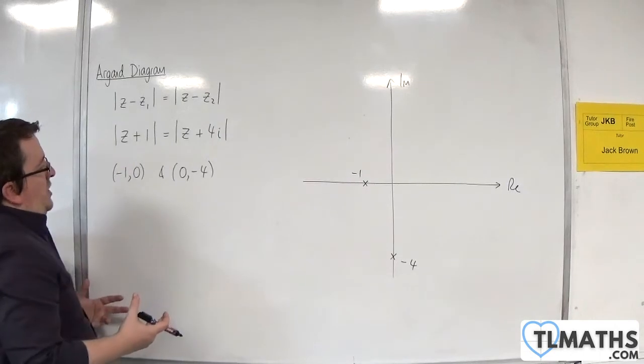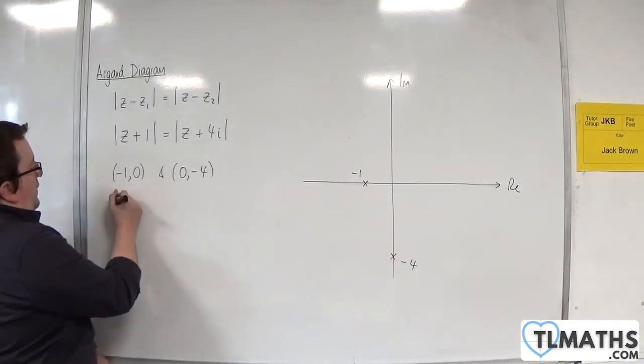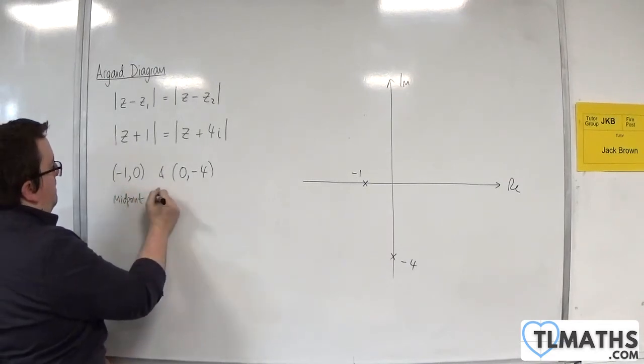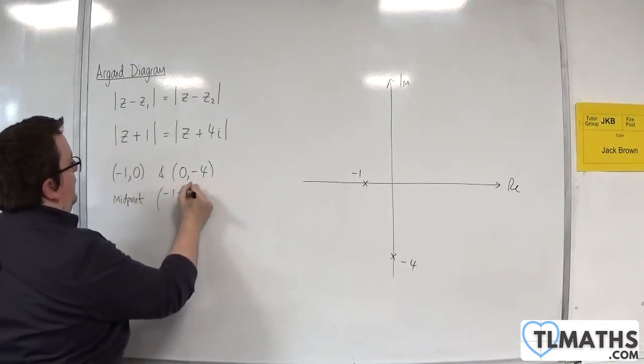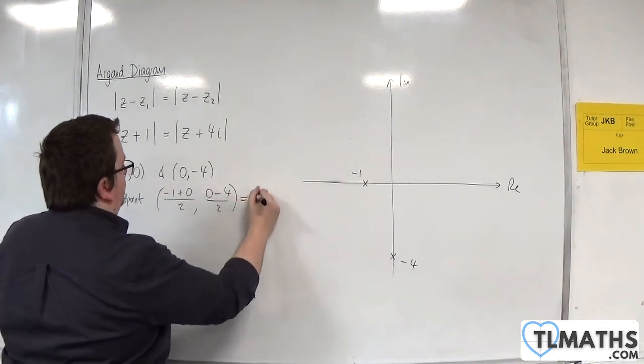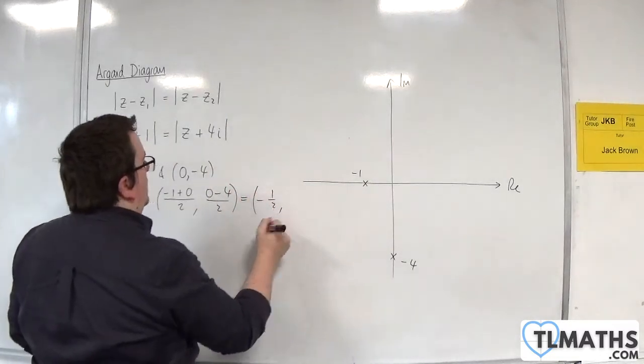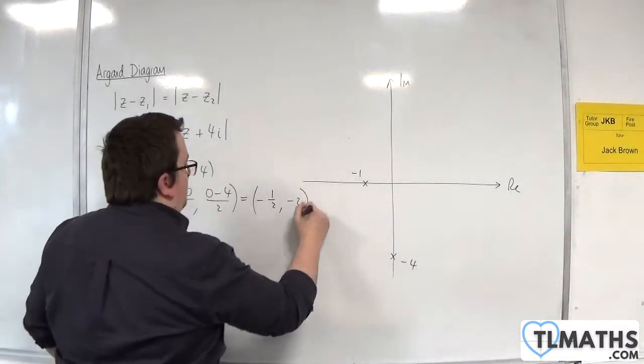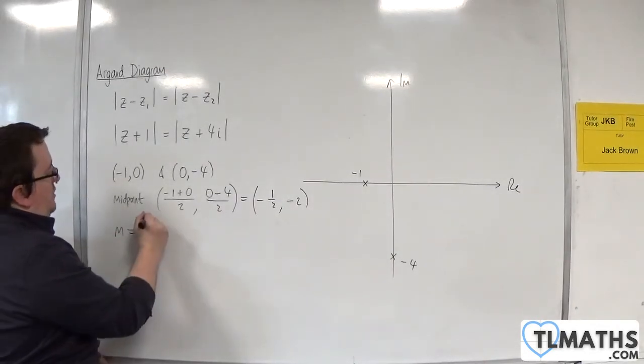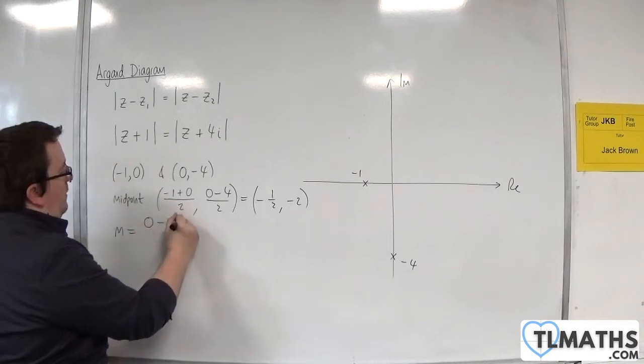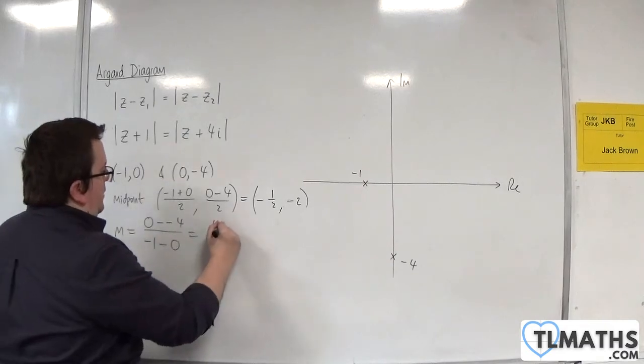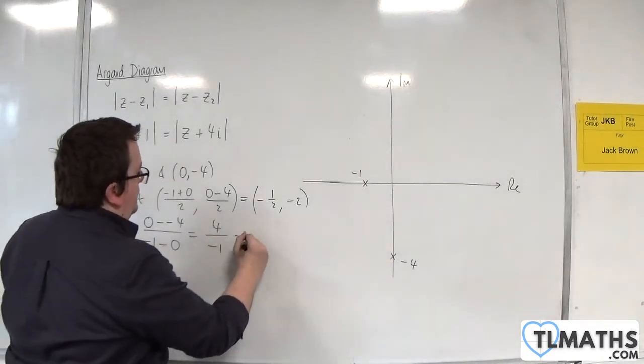Using first year A-level maths techniques, the first thing I would do is find the midpoint: (-1 + 0)/2, (0 - 4)/2, so -1/2 and then -2. Then the gradient will be the difference in the y-coordinates (0 - (-4)) divided by the difference in the x-coordinates (-1 - 0), so 4/(-1) = -4.